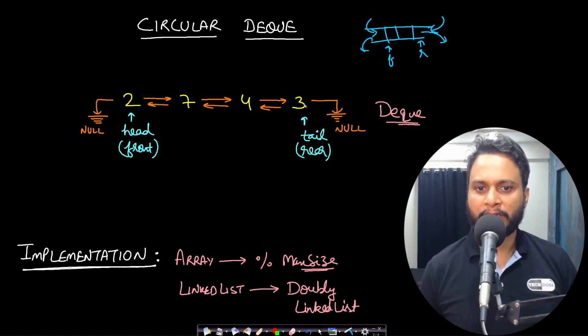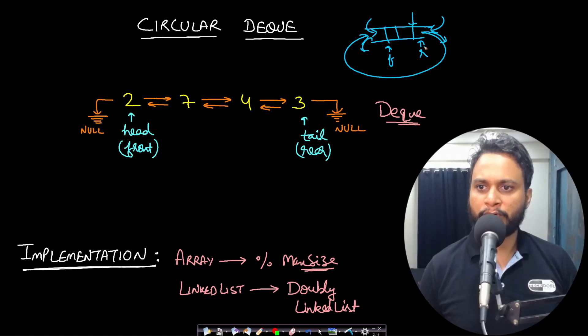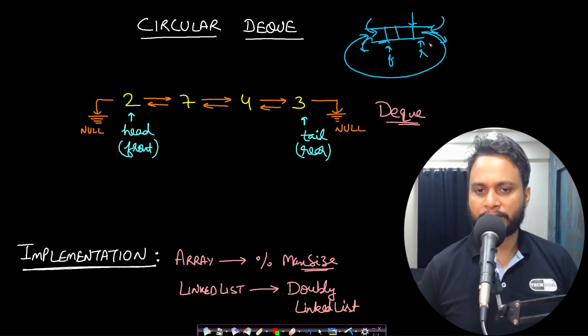A circular doubly ended queue means that both ends are joined in a circular way, so if you do rear plus one you will reach the front, and if you do front minus one you will reach the rear.